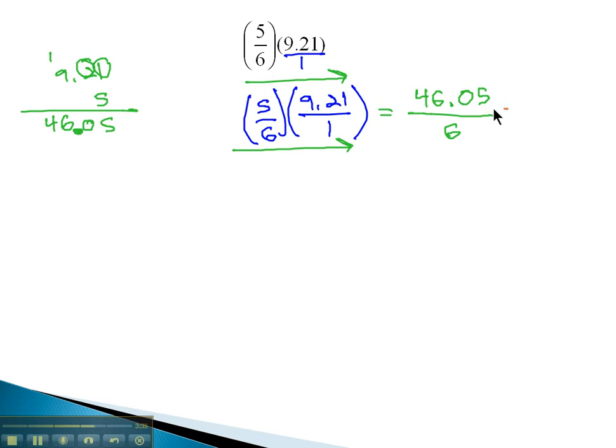To finish simplifying, the fraction bar represents division. The denominator's the divisor out front, 6 into 46.05. 6 goes into 46, 7 times. 7 times 6 is 42, that gives us a 4. Bring down a 0.